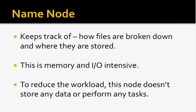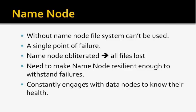If the name node goes down, the file system cannot be used because the name node holds all the metadata of the cluster. This makes it a single point of failure. However, there is a workaround — if you can revive the name node, your files are not lost because the metadata still exists. To make the name node resilient, you need to give it a good hardware configuration so the probability of failure is as low as possible.